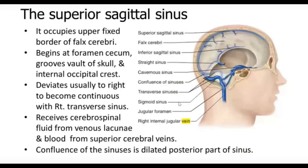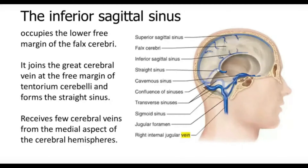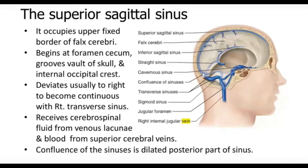The superior sagittal sinus is the superior one, lodging inside the skull superiorly in the sagittal plane, starting from the frontal bone crista galli anteriorly and going occipitally to the confluence. The confluence means the junction of the two transverse sinuses and one straight sinus.